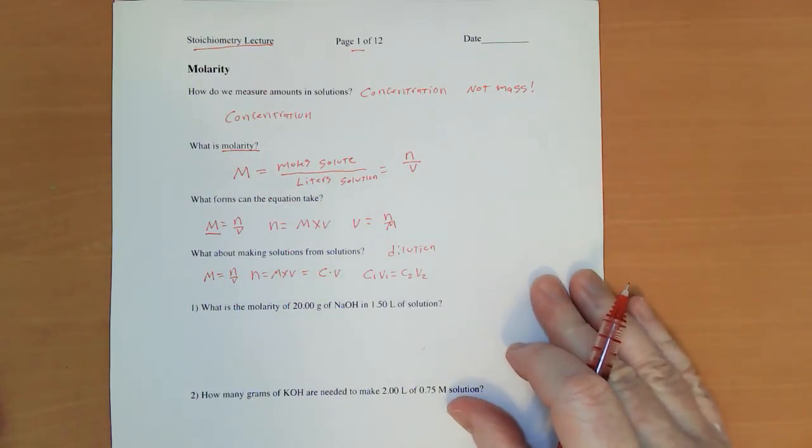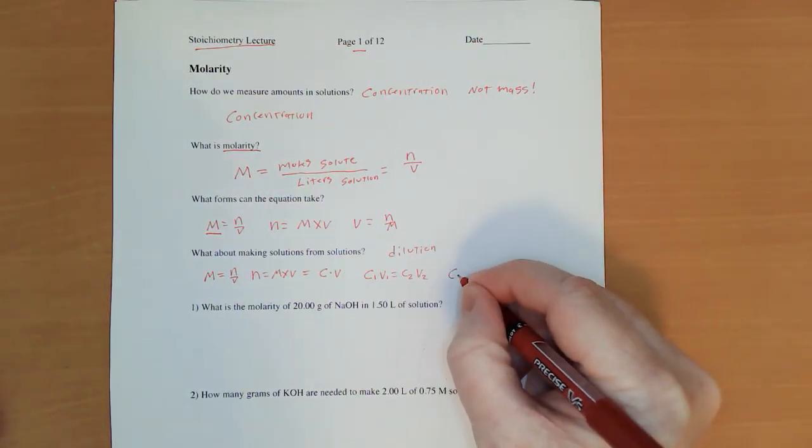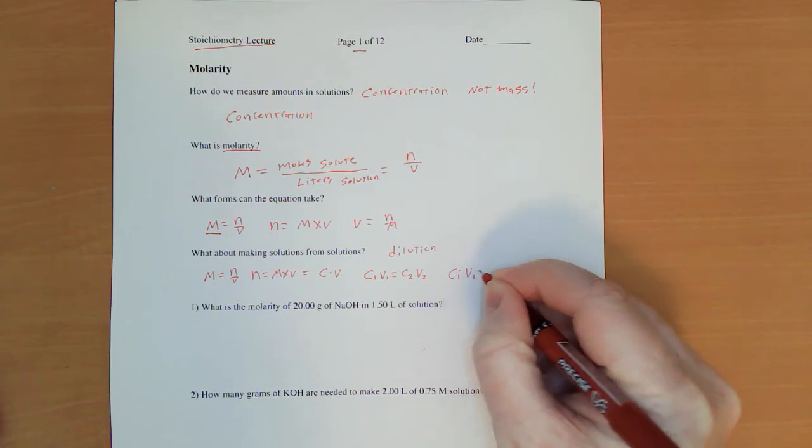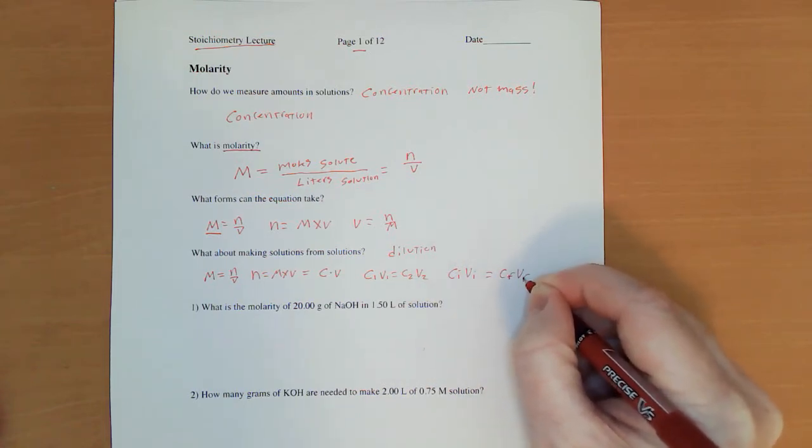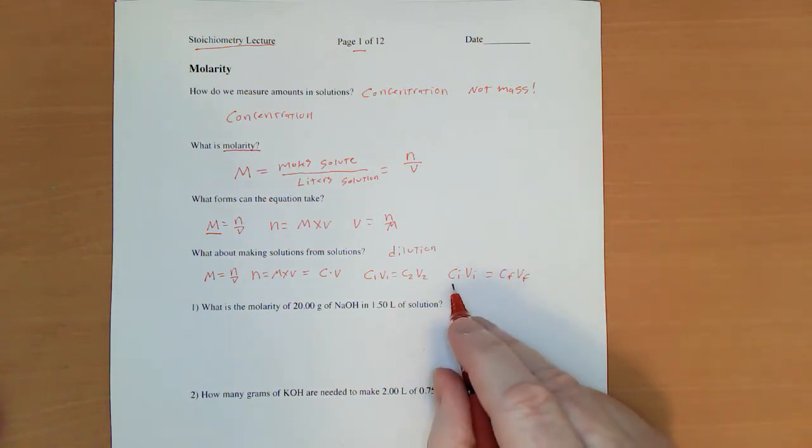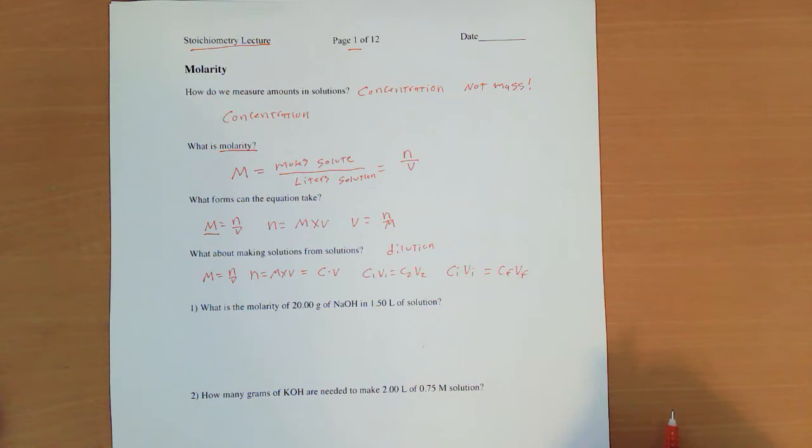Or that c1 v1 equals c2 v2. Or the way I was actually shown a long time ago, c i v i equals c f v f, standing for initial and final.